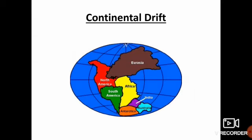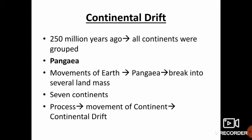This is the image of continental drift. About 250 million years ago, all the continents were grouped together into a supercontinent called Pangaea. The forces inside the Earth caused Pangaea to break into several landmasses that began to slowly move apart and formed seven continents. This process was gradual and took millions of years.